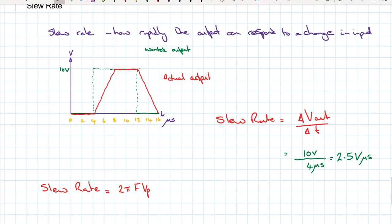Now slew rate is also equal to two pi multiplied by the frequency multiplied by the peak voltage. What we can do is we can use this formula by rearranging it. If we know what the slew rate is and we know the peak output voltage, then we can work out the maximum frequency we can get for a distortion free output.